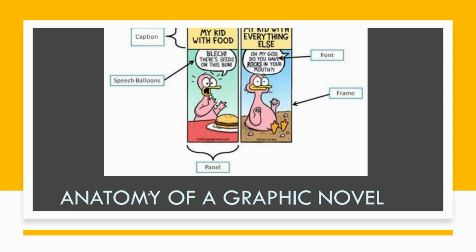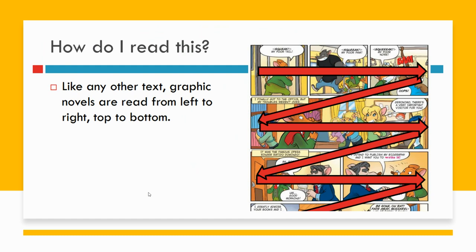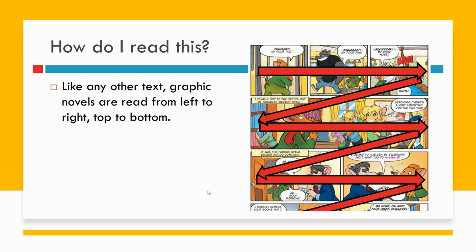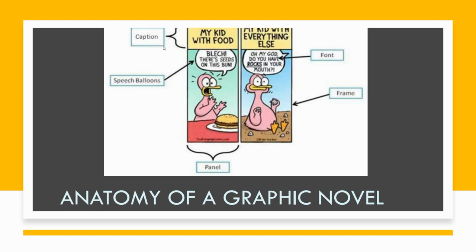We're going to talk a little bit about the anatomy of a graphic novel for those of you who've never seen one. Like any other text, graphic novels are read from left to right and top to bottom. Graphic novels contain panels, tiers, frames, gutters, dialogue balloons, thought balloons, captions, and sound effects. If we go to this first example, we can see the caption, speech balloon, a certain font, the frame, the panel, and the gutter — that space in the middle.